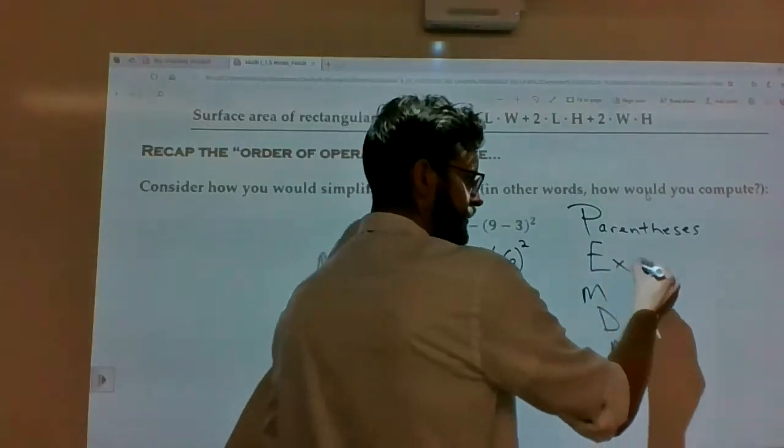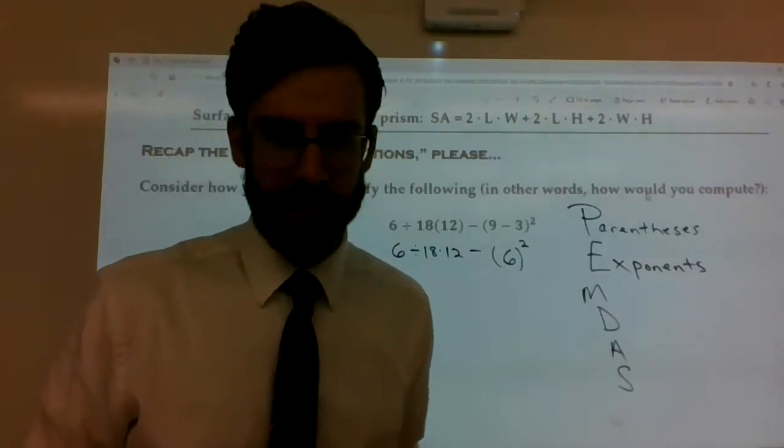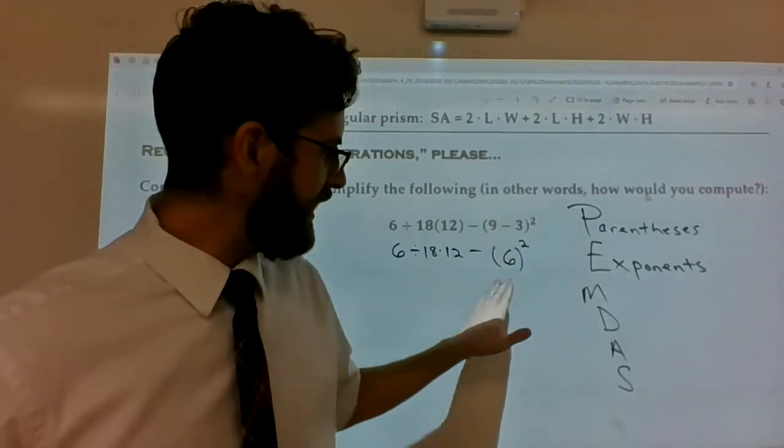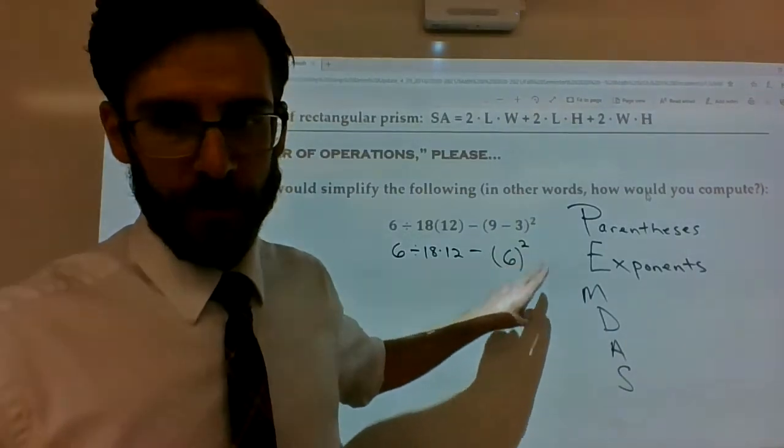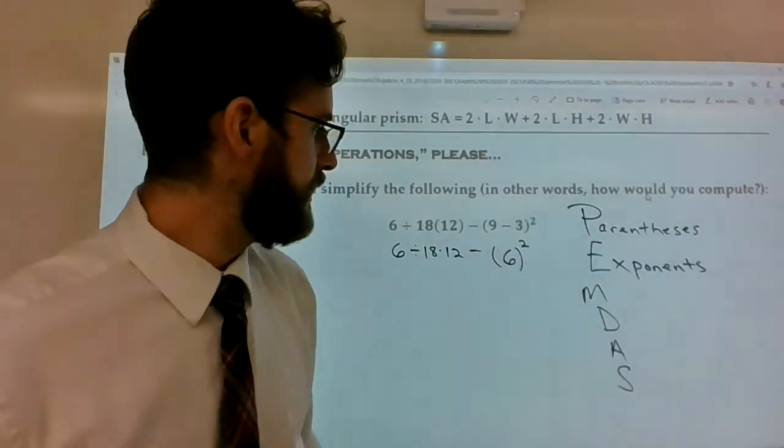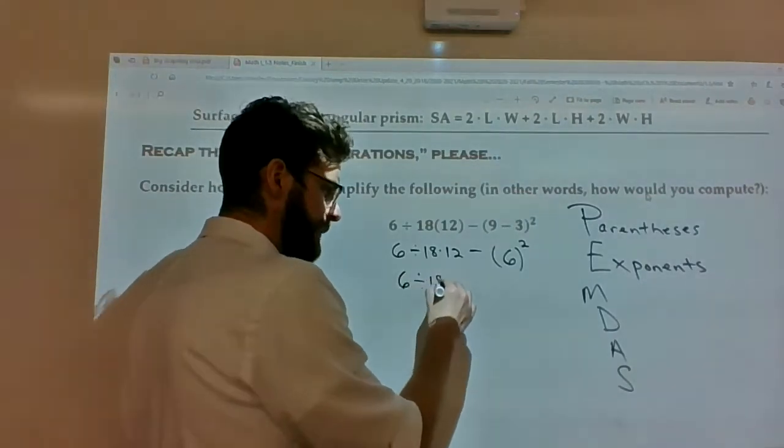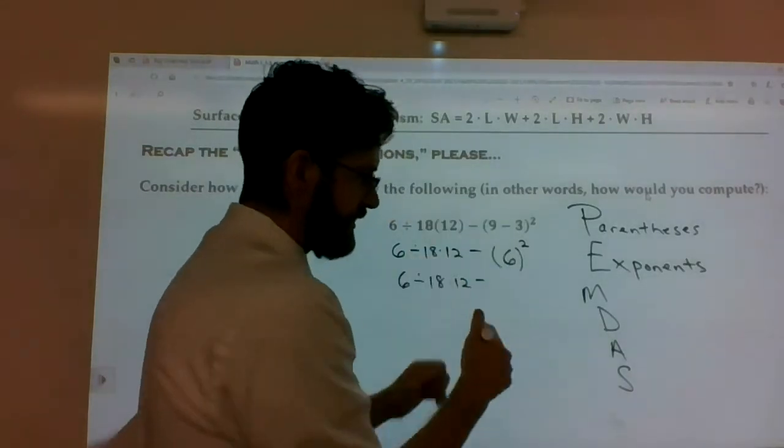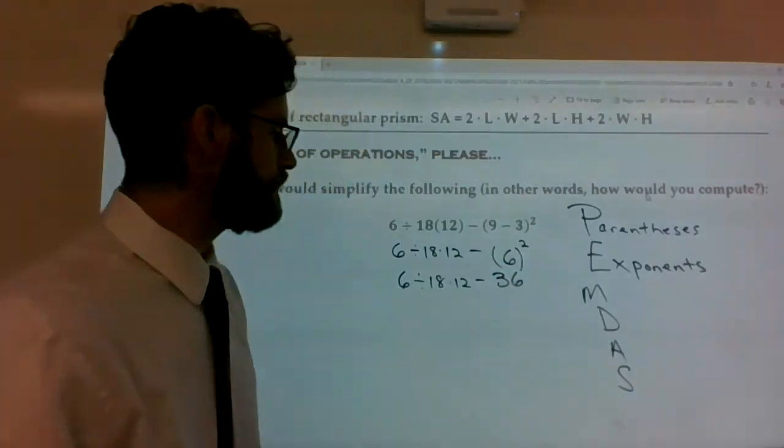Exponents is the next part of the acronym. Exponents by definition informally are just those little numbers to the upper right of any base in which you're saying, hey, see that 6? Multiply it by itself two times. If that were a 3, you'd multiply it by itself three times. So that's going to be the next move we do. So I'm just going to leave the 6 divided by 18 times 12 alone and say we are subtracting parentheses 6 times 6. 6 times 6 is 36.